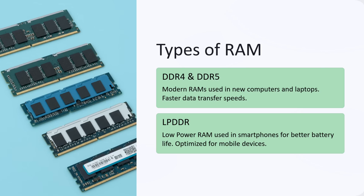What are the different types of RAM? The first type is DDR4 and DDR5 — these are modern RAMs used in new computers and laptops, and they support faster data transfer speeds. The next type is LPDDR, which is low-power RAM used in smartphones for better battery life, optimized for mobile devices.